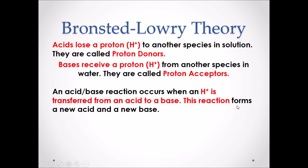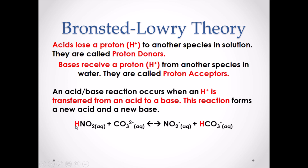An acid-base reaction occurs when an H+ ion is transferred from an acid to a base, forming a new acid and a new base in the products. In our chemical reaction, we can see HNO2, which is our acid, and CO3 2- is our base. Our acid donates its hydrogen to the base, resulting in two products: NO2- is our new base, and HCO3- is our new acid.